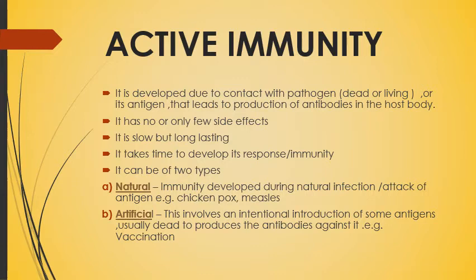The second type is artificial active immunity. This involves an intentional introduction of some antigen, usually dead, to produce antibodies against it. For example, vaccination. Today we have vaccinations for many diseases: polio, chickenpox, typhoid, tuberculosis. That particular injection consists of a weak or dead antigen of that particular disease, and after that the body will develop antibodies against it and become immune to that disease.